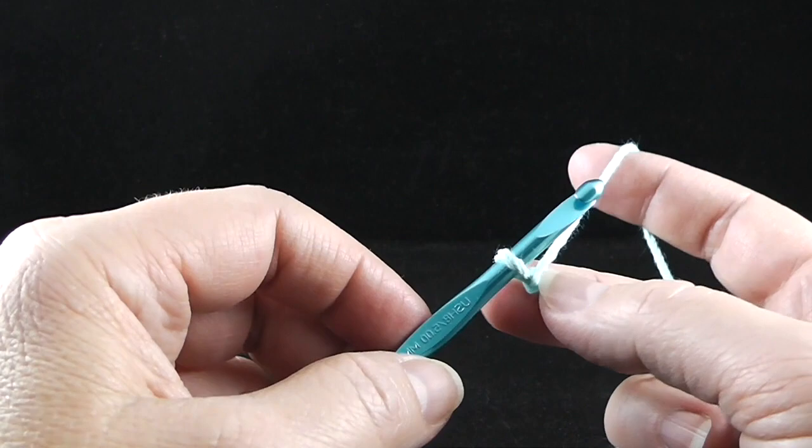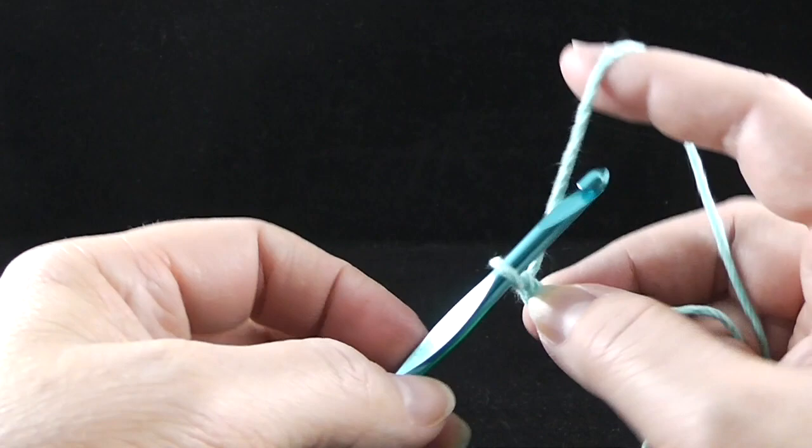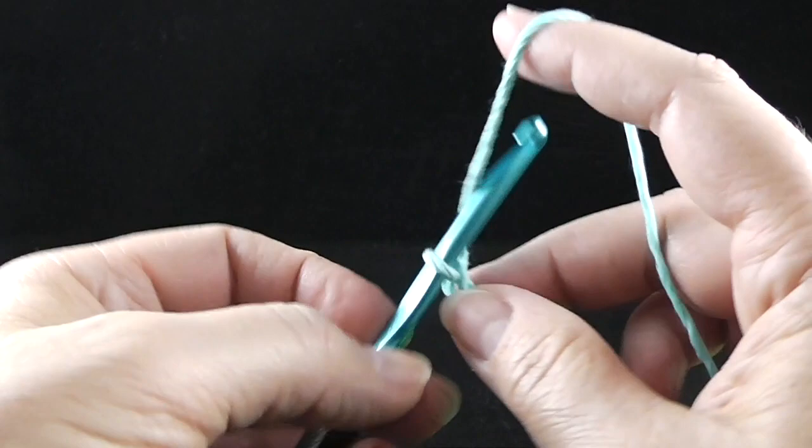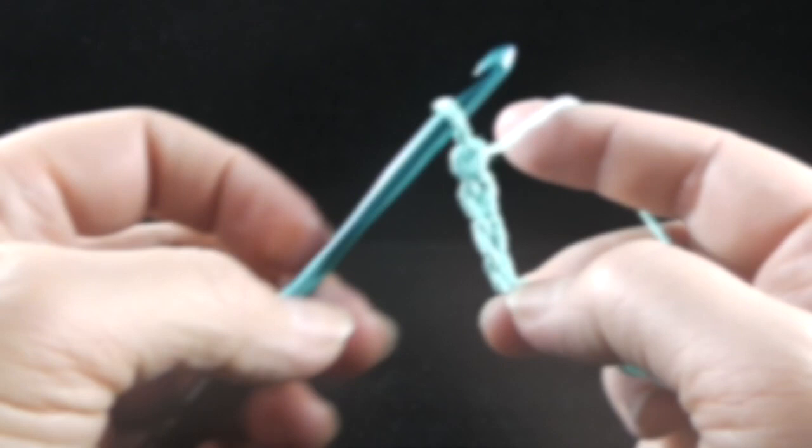Now for the chain, we put the yarn over the back of the hook and pull through, over the back, pull through. You want to do this till you have 25 chains. So I'm going to go ahead and make my 25 chains and then I will come back to you.